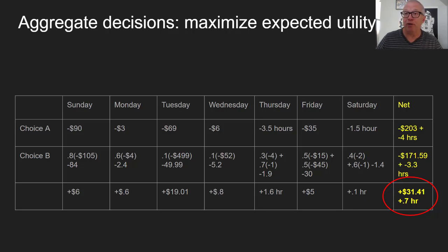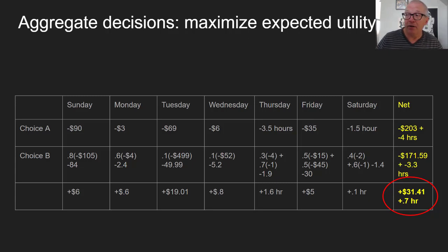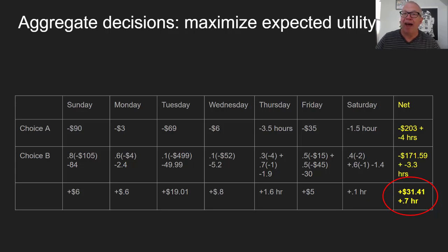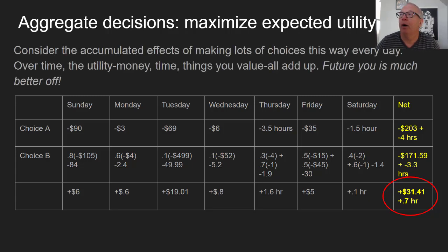Imagine a set of choices A — the first row across the chart — and at the end of the week you've spent $203 and used up four hours. But if you adopted choice B in every case, doing what expected value told you, at the end of the week you spent $171.59 and used up 3.3 hours. The net over the course of the week is you're ahead by $31.41 and 0.7 of an hour. The utility — money, time, the things you value — all adds up.